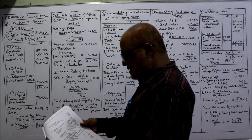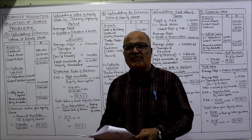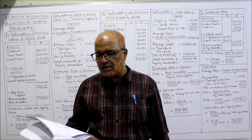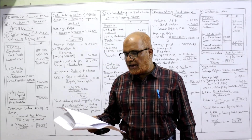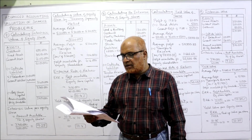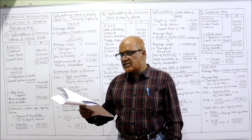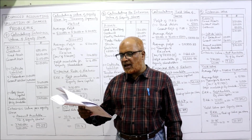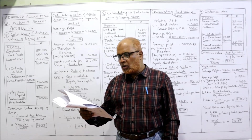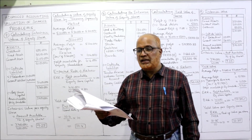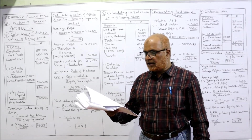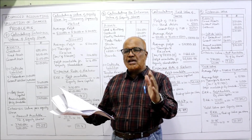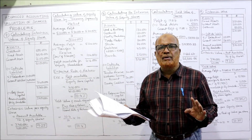Now see the 7th problem. On 31st December 1992, the balance sheet of a limited company reveals the following: share capital 40 lakh, reserves and surplus 11 lakh, long term borrowings — 5% debentures 10 lakh, current liability 14 lakh. So debentures and current liability are outside liabilities.